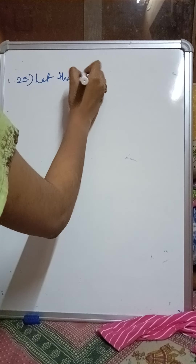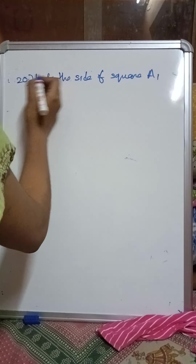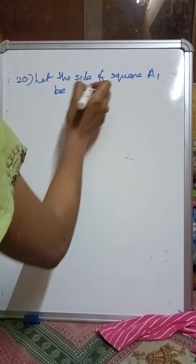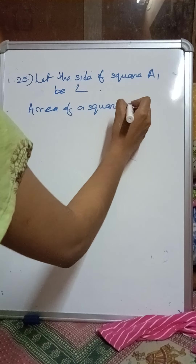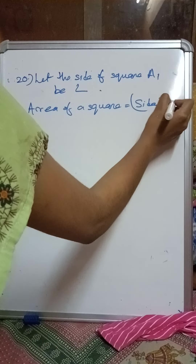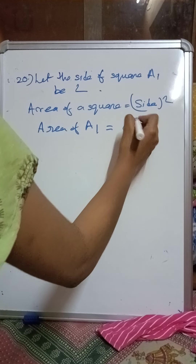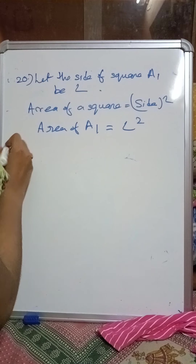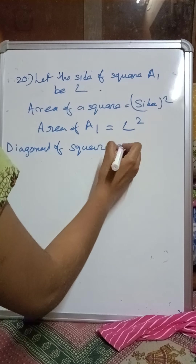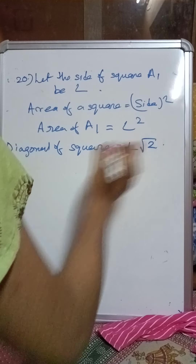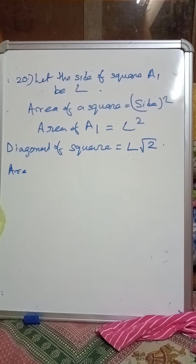Let the side of square A1 be 'L'. We know the area of a square equals side squared, so area A1 = L squared. Now, the diagonal of a square is side × root 2, so the diagonal of this square is L root 2.